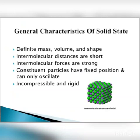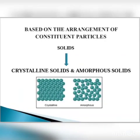Now we will classify solids. Based on the arrangement of constituent particles, solids can be classified into two types: crystalline solids and amorphous solids.